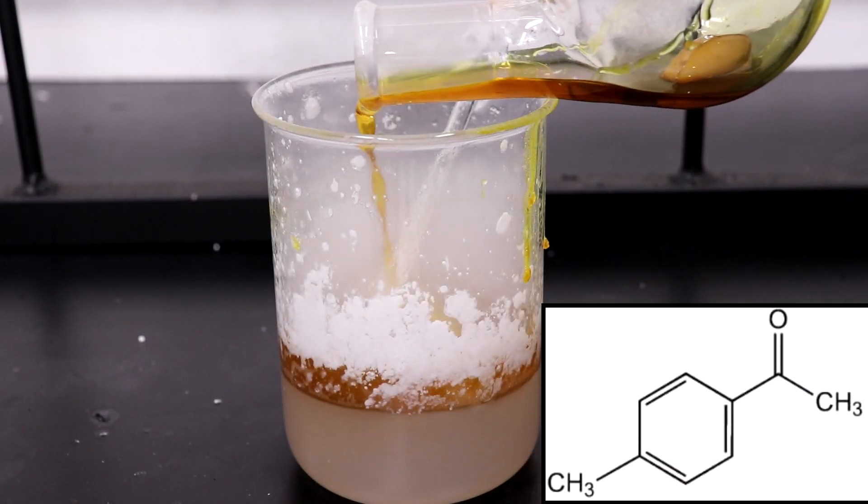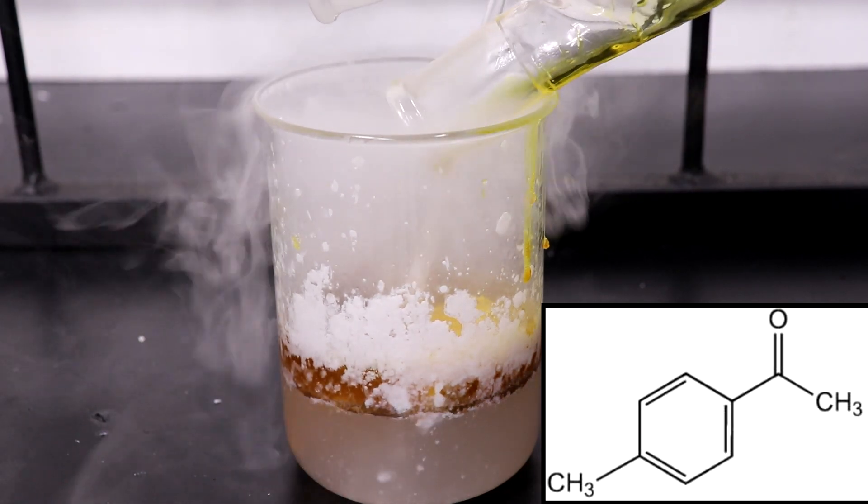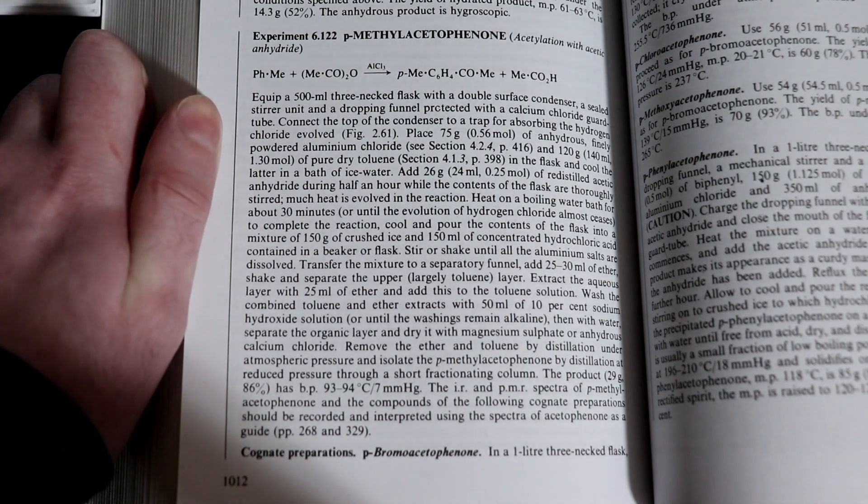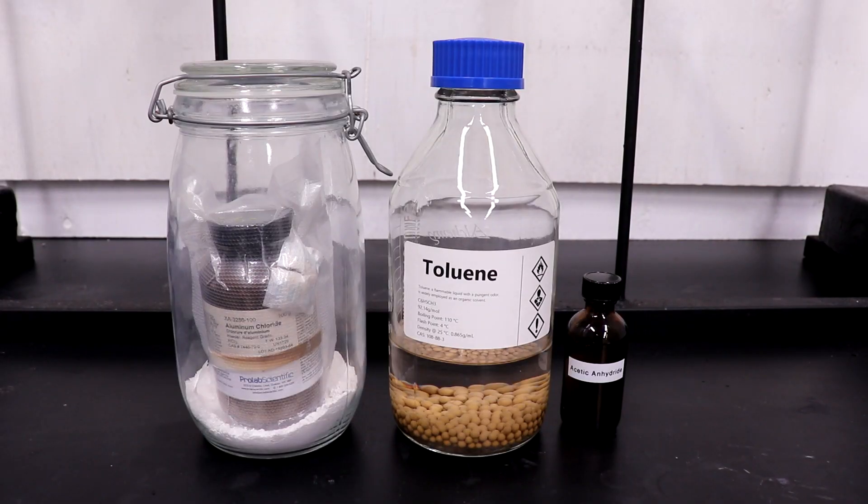Today, we are going to be running the Friedel-Crafts acylation of toluene with acetic anhydride to produce P-methylacetophenone, following the prep listed in Vogel. I ran the procedure at half scale using 37.5 grams of anhydrous aluminum chloride, 70 mL of toluene, and 13 grams of acetic anhydride.